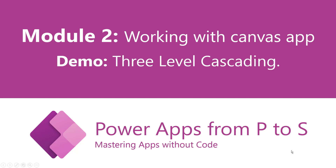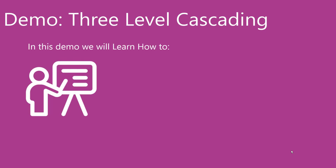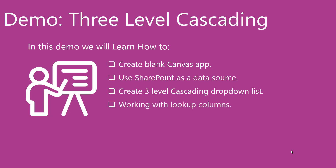We are in module 2, working with canvas apps. In this video we will have a demo for creating three-level cascading dropdowns. We will create a blank canvas app, use SharePoint as a data source, create a three-level cascading drop-down list, and work with lookup columns.